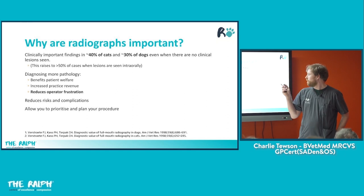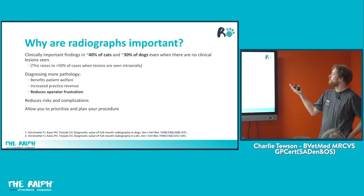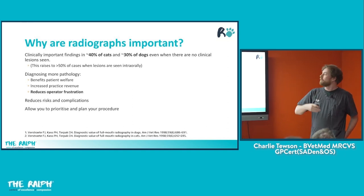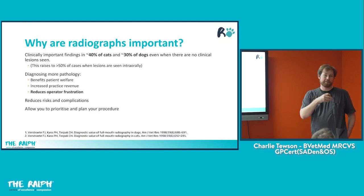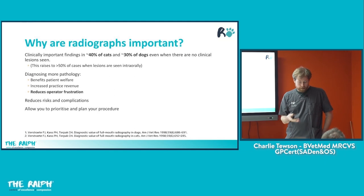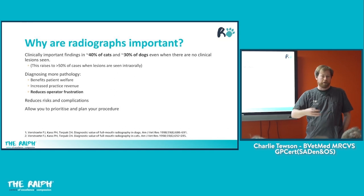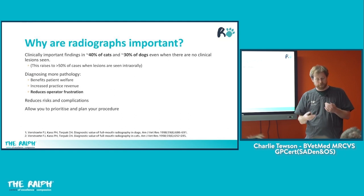There's a lot of evidence. This is a study done 25 years ago showing that clinically important findings will be found in about 40% of cats and 30% of dogs, even when no clinical lesions are found. This is a landmark paper, and since then other studies have supported these findings. It rises to 50% of cases when you've got an intraoral lesion — so if you've got a cat with tooth resorption you can see intraorally, 50% of the time you'll find something else significant. The classic saying is you wouldn't ask an orthopedic surgeon to do surgery on a fracture without an x-ray — the same should be true for dentistry. If we're ever going to do an extraction, you really need a dental x-ray.